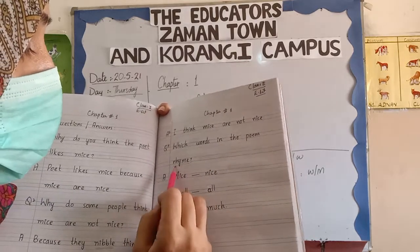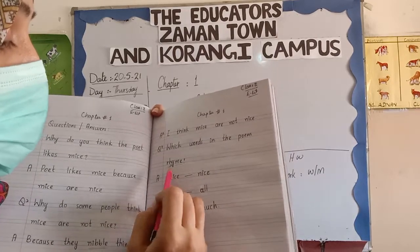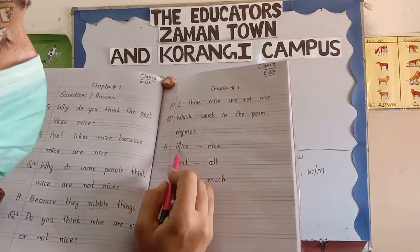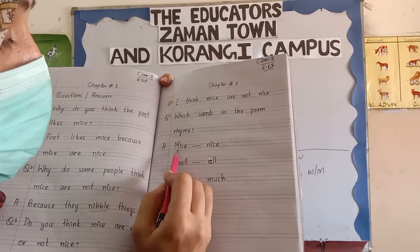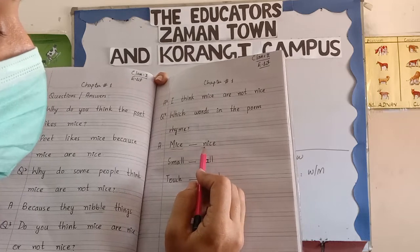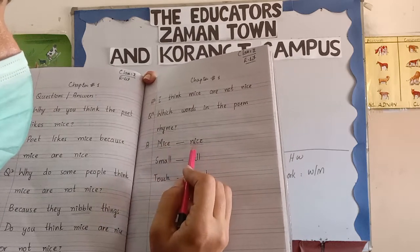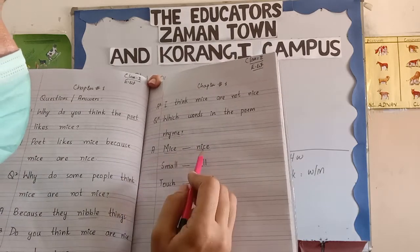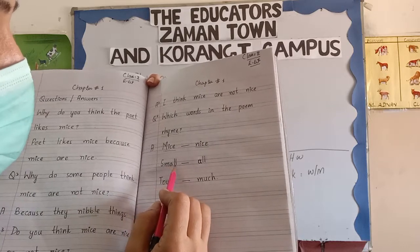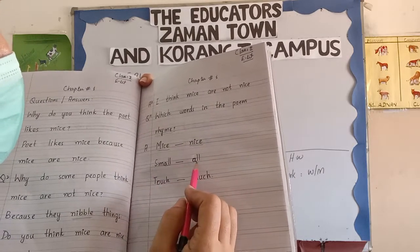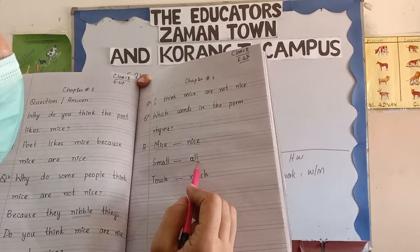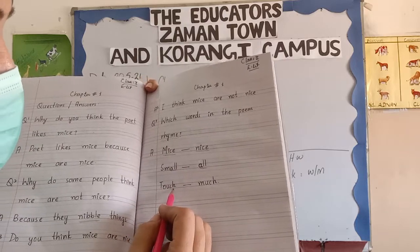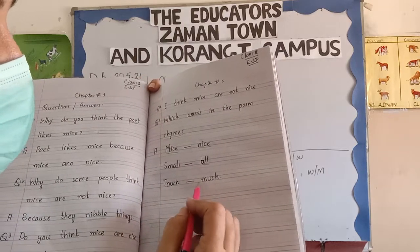Question number 3: do you think mice are nice or not nice? This is a very interesting question — you will write your own opinion. My answer is: I think mice are not nice because they nibble things and they look very dirty. Question number 4: which words in the poem rhyme? Rhyming words have different meanings but the same sound. Mice and nice — M-I-C-E and N-I-C-E. Small and all — S-M-A-L-L and A-L-L. Touch and much — T-O-U-C-H and M-U-C-H.